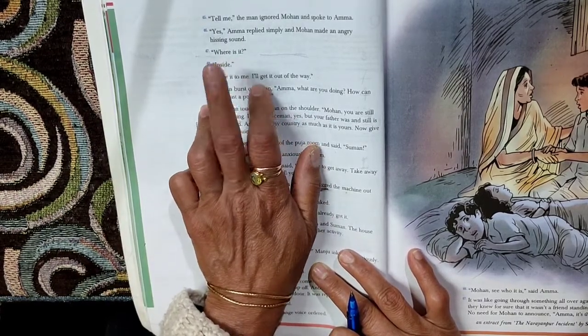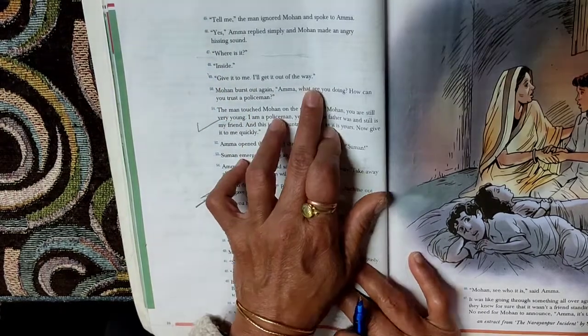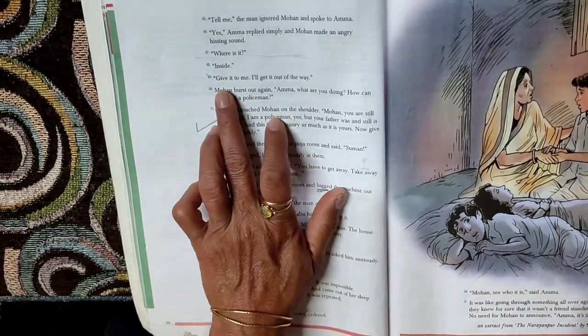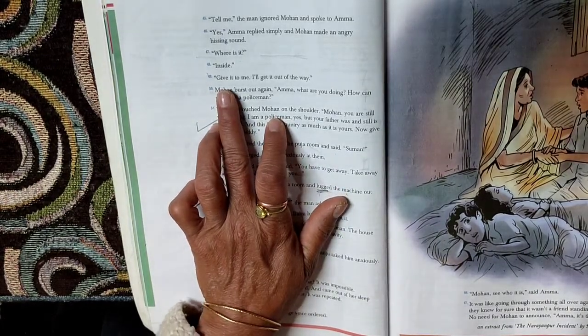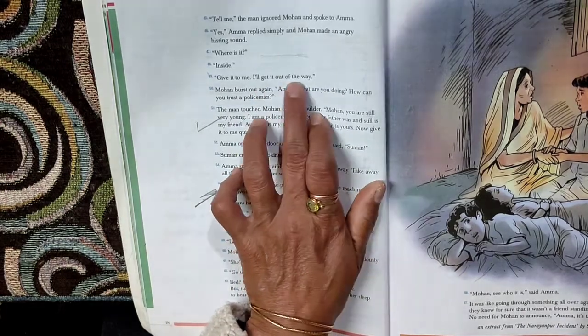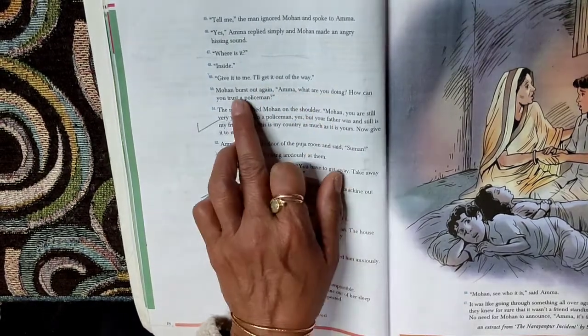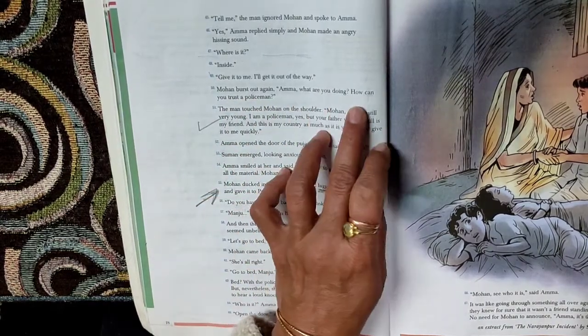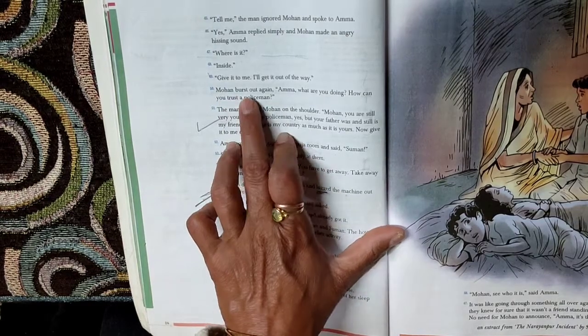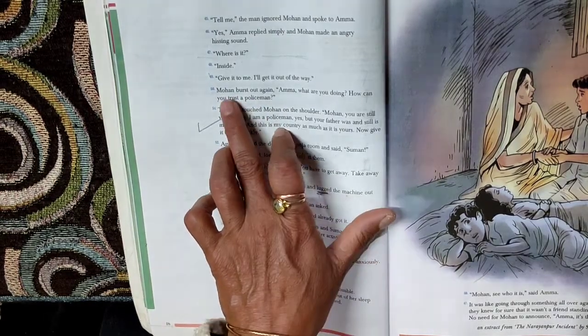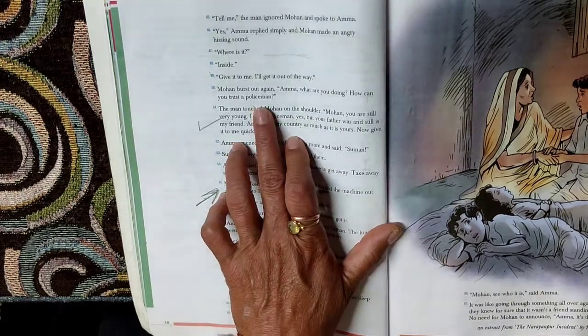Where is it? Sub-inspector Patel says, where is it? Amma says, inside. Give it to me, I will get it out of the way. I will take the cyclostyling machine away from here. Mohan burst out again. Amma, what are you doing? How can you trust a policeman? So Mohan is still persisting that, Amma, what are you doing? Why are you trusting this policeman whom we don't know at all?